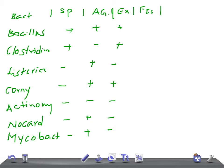Now let's talk about facultative intracellular organisms. Bacillus — no. Clostridium — no. Listeria — yes, they are facultative intracellular. Corynebacterium — no. Actinomyces — no. Nocardia — no. Mycobacterium — yes, they are facultative intracellular.